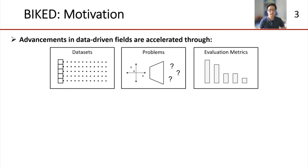Rapid advancements in machine learning research fields are often catalyzed by the introduction of quality open source datasets. Open source datasets often serve as benchmarking problems to evaluate the performance of different algorithms on a level playing field. Along with these problems, we typically have commonly accepted evaluation metrics and objectives. In computer vision, for example, well-known datasets like ImageNet, CIFAR-10, and MNIST often serve as the standard benchmarks for evaluating new techniques and determining the state of the art.